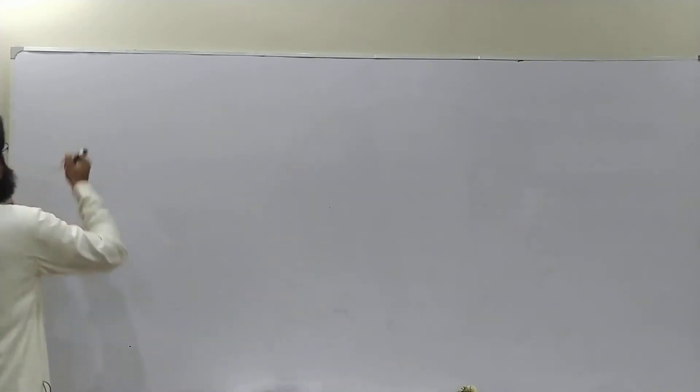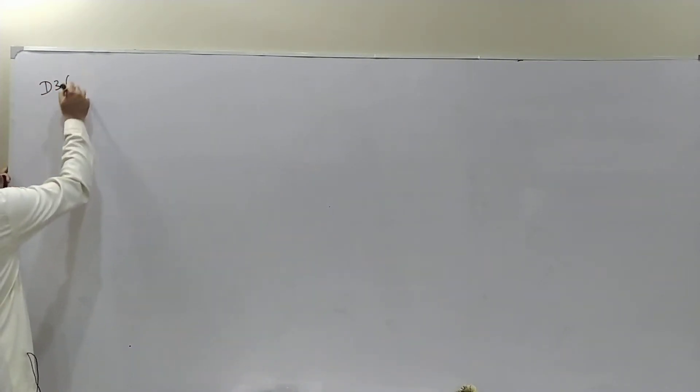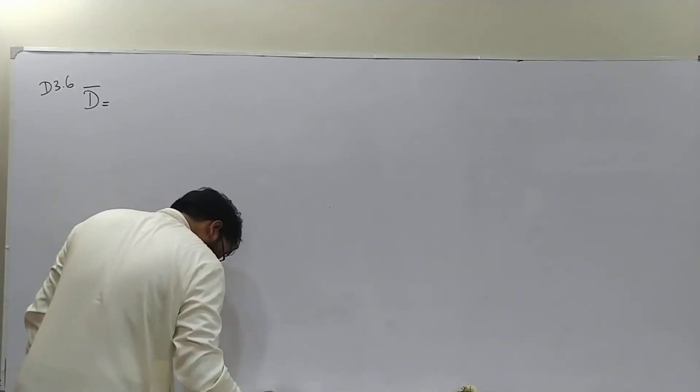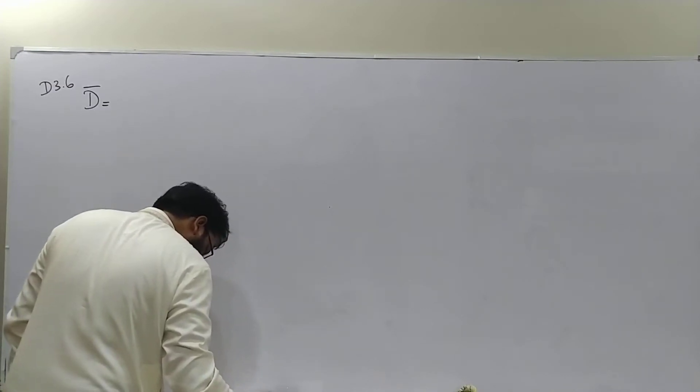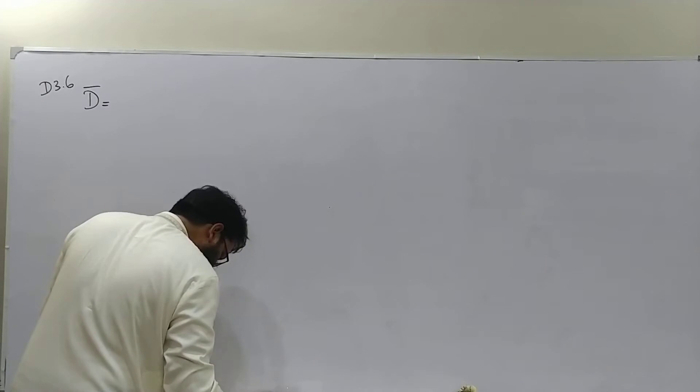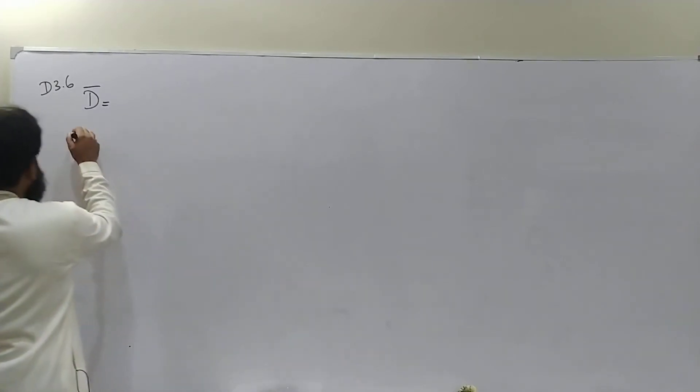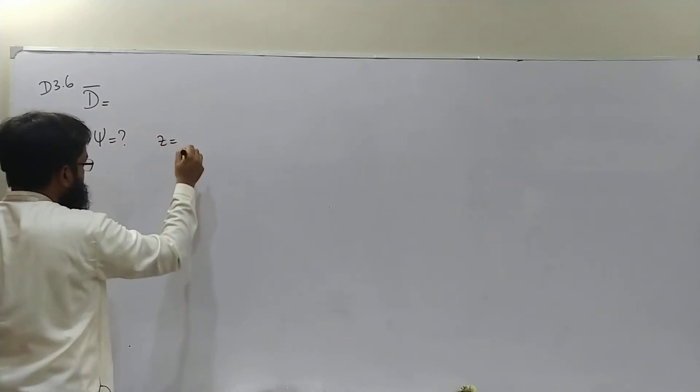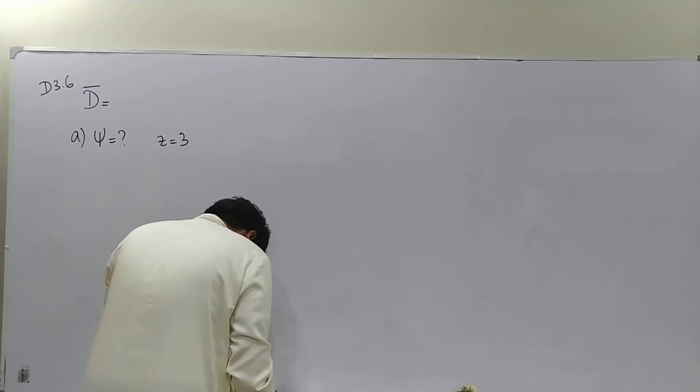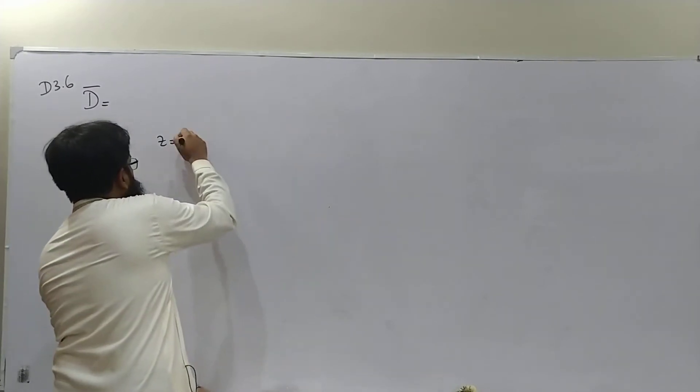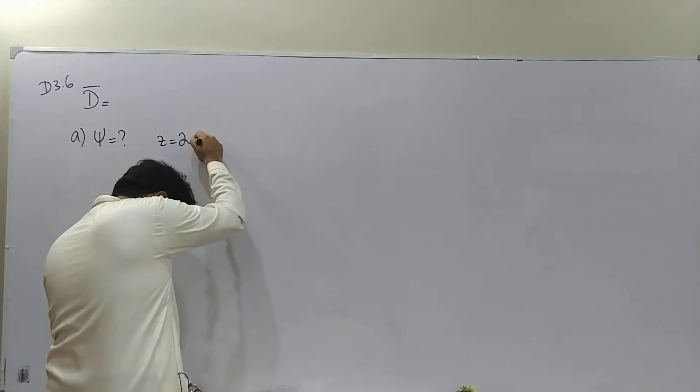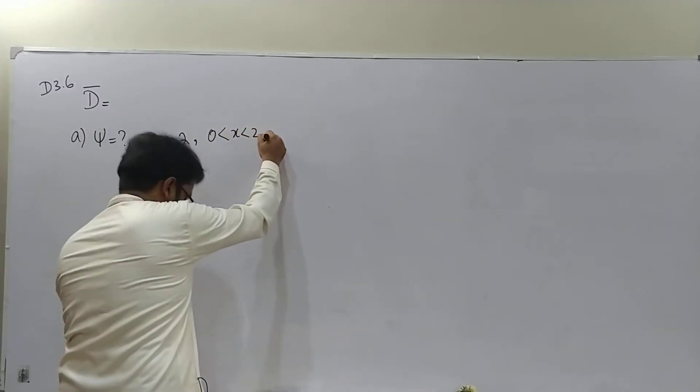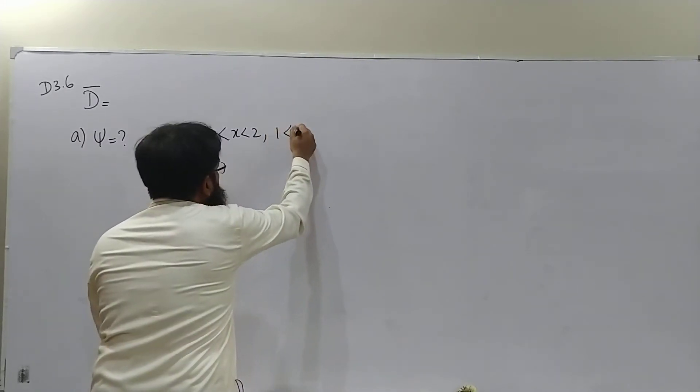Just to give you the hint, so D is given to us. Whatever the value of D is given to us, we are not interested in the whole value. In Part A, they are asking us to find a total electric flux passing through Z equals to 2, X from 0 to 2, Y from 1 to 3.